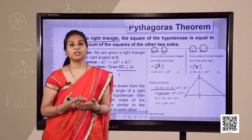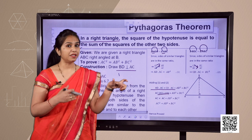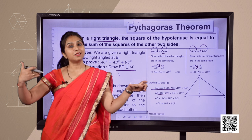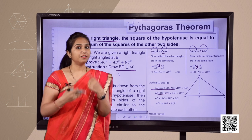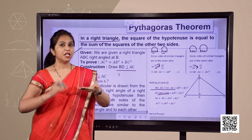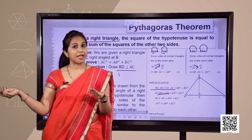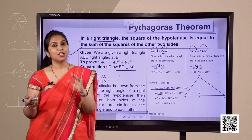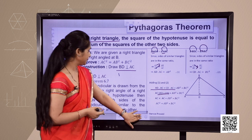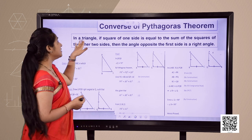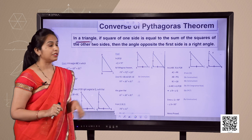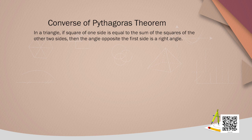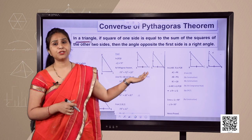After the proof, we will discuss the converse of Pythagoras theorem. In Pythagoras theorem, a right angle triangle is given and we show that the square of the hypotenuse equals the sum of squares of the other two sides. The converse reverses this: if in a triangle the square of one side equals the sum of squares of the other two sides, we have to prove the triangle is a right angle triangle.